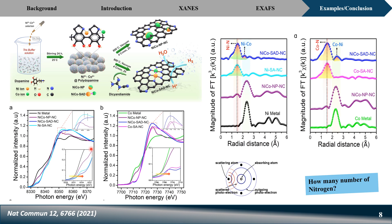This electron transfer suggests some kind of coordination between the two metals. However, XANES alone cannot tell us exactly whether there is a direct bond between them, or whether three nitrogen atoms are bridging them as shown in the structural diagram. So XANES gives us partial interpretation, and for more detail we need to go to the EXAFS data.